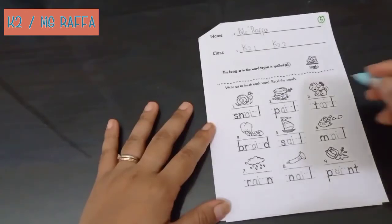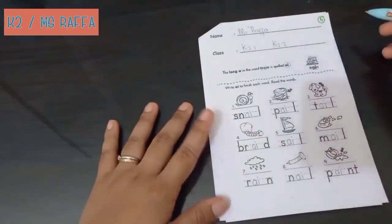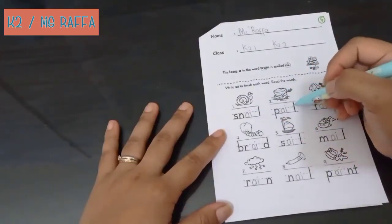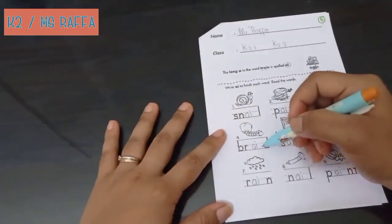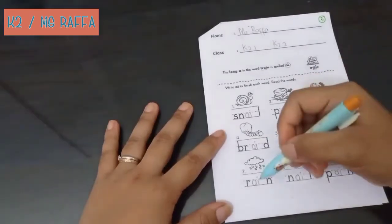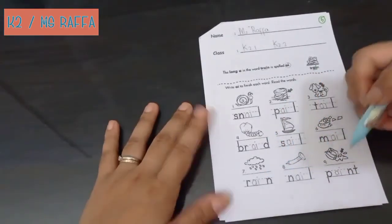Okay. You just write long A. Okay. Train. Snail. Pail. Tail. Braid. Sail. Mail. Rain. Nail. Pain. Okay.